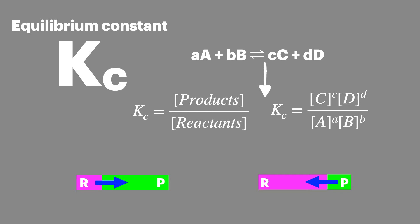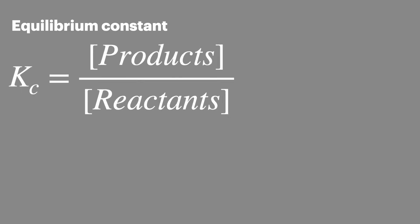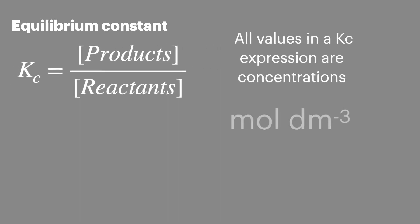For more on this click the card at the top or the link in the description below. When we look at the KC expression we can see that all values are concentrations. This is why they're contained within square brackets and they have the units moles per decimetre cubed.